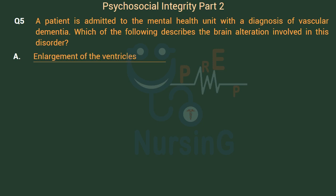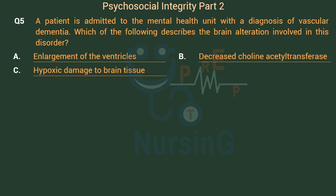Option A: Enlargement of the ventricles. Option B: Decreased choline acetyltransferase. Option C: Hypoxic damage to brain tissue. Option D: Formation of beta-amyloid plaques.